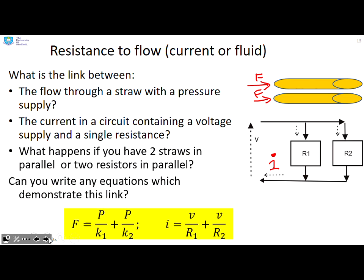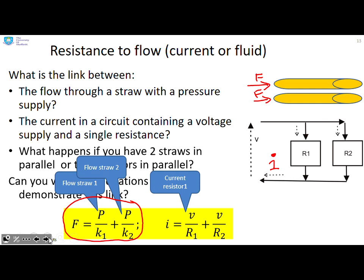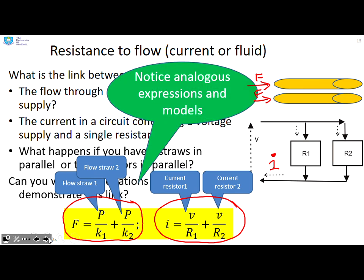Here we have it. The flow through straw one is the pressure difference divided by some constant. The flow through straw two is the pressure difference divided by some constant. You can see the overall flow is the flow through straw one plus the flow through straw two. What about the electrical circuit? The current through resistor one is the voltage divided by the resistance. The current through resistor two is the voltage divided by the resistance. The overall current is the current through resistor one plus the current through resistor two. What do you notice? We've got analogous expressions and models for what appeared to be very different systems.